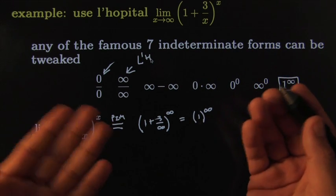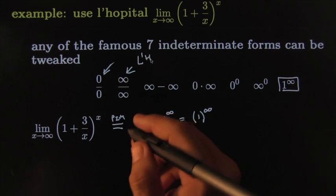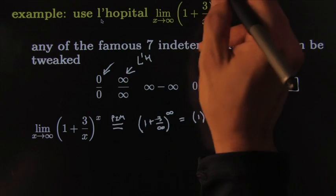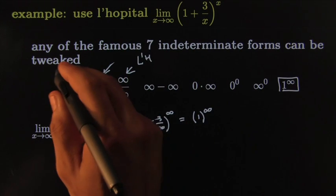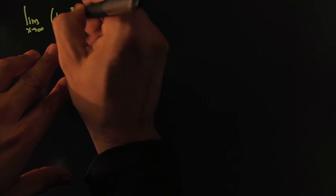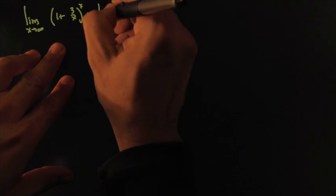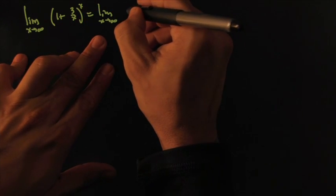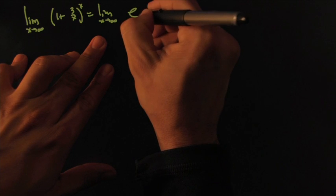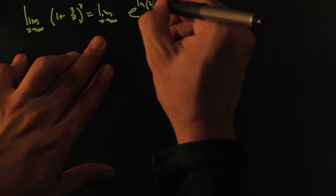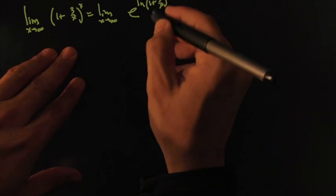We'll use the same trick that we used in the previous example. I'm going to use a brand new page for this. So the limit as x goes towards infinity of 1 plus 3 over x raised to the x is equal to the limit as x goes towards infinity of e to the ln of 1 plus 3 over x raised to the x. That same trick again. And now I can bring the exponent down.